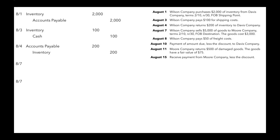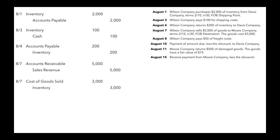First, we record what we sold these goods for. We sold $5,000 of goods on account, so we debit accounts receivable and credit sales revenue for $5,000. The second entry records the cost of these goods — $3,000 — so we debit cost of goods sold and credit inventory for $3,000.